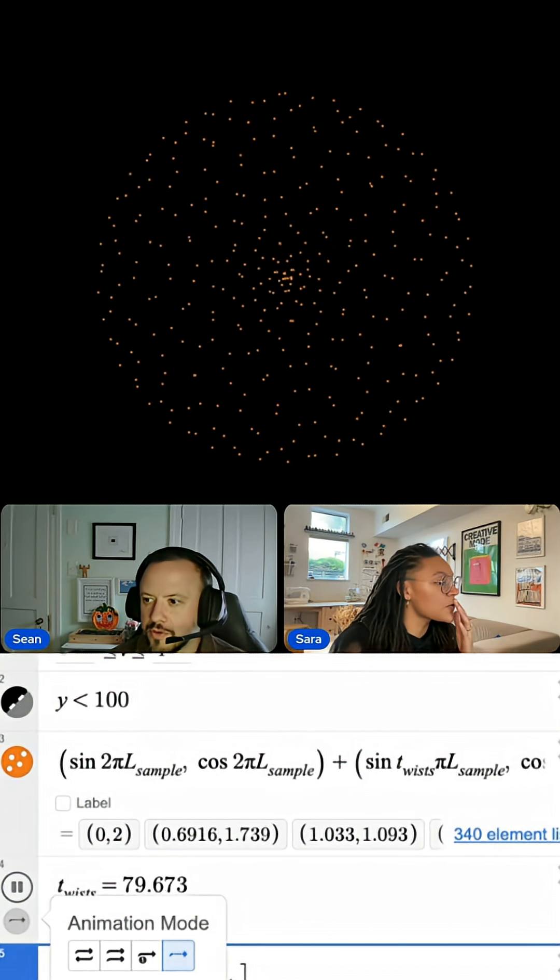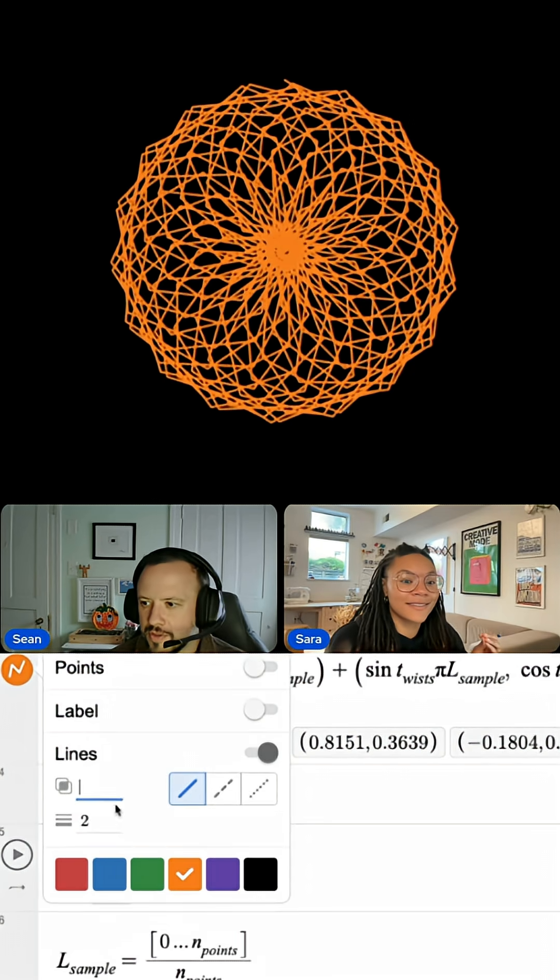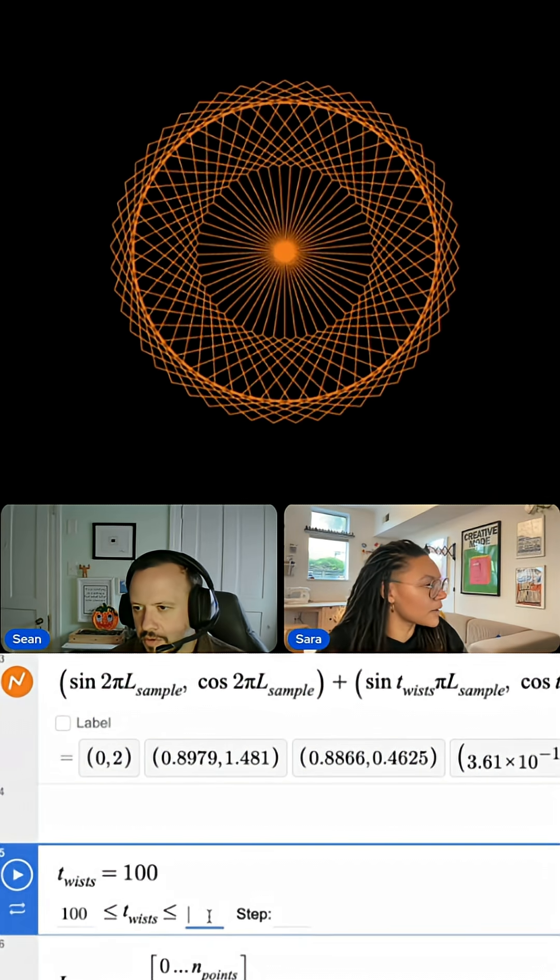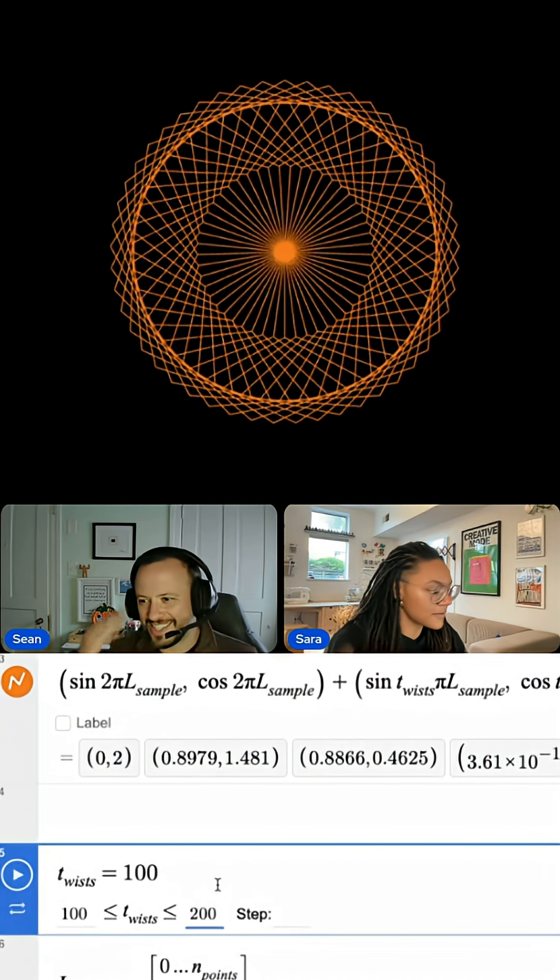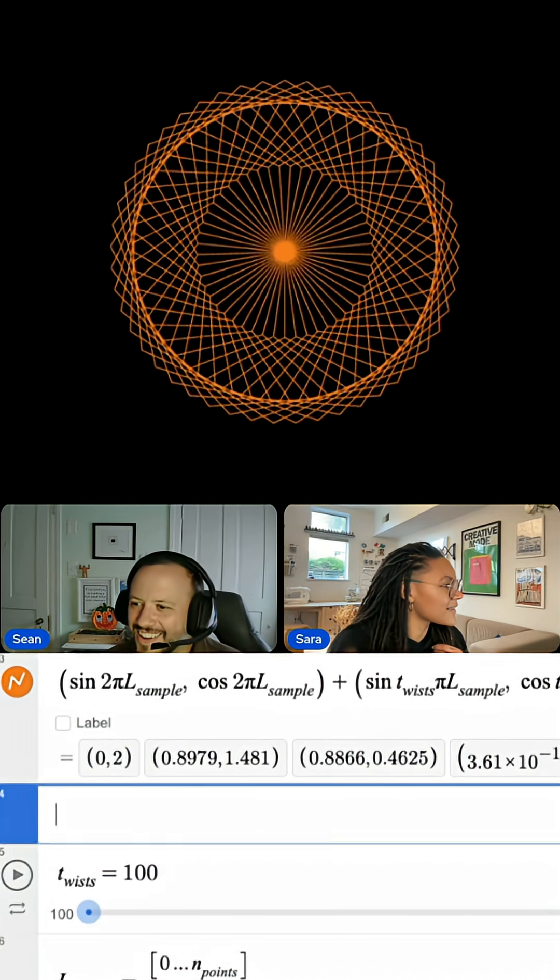Another thing I think would be really cool is what if we drew some lines between the points? I guess I can go back and forth. Maybe I want to try between 100 and 200. Oh my gosh. You're just putting 100 in there. I know.